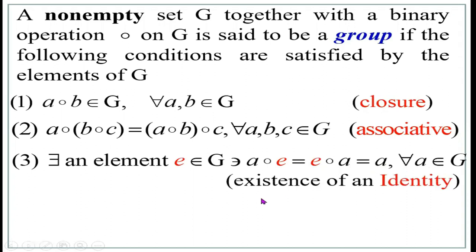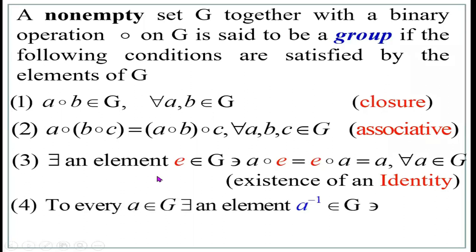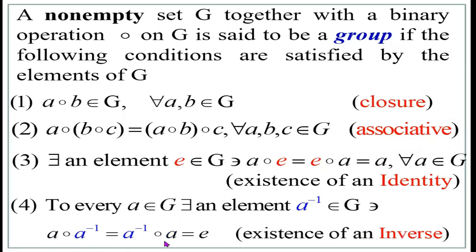This is called the existence of identity property, where E is the identity element. (4) Existence of inverse — for every A in G, there exists an element A-inverse in G such that A circle A-inverse equals A-inverse circle A equals E. There are four axioms: closure, associative, identity, and inverse. An algebraic structure satisfying these four axioms is called a group.